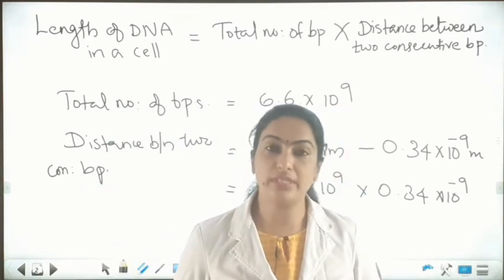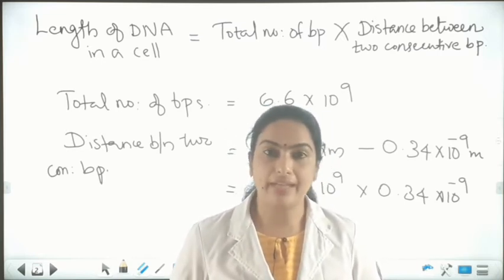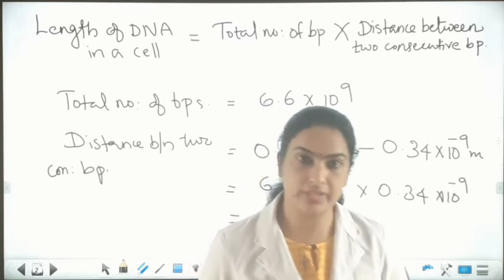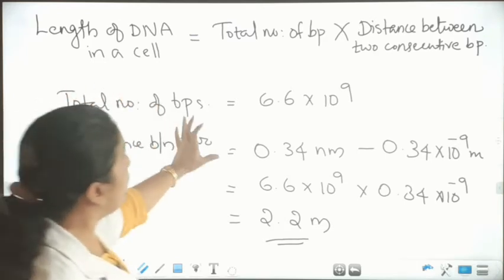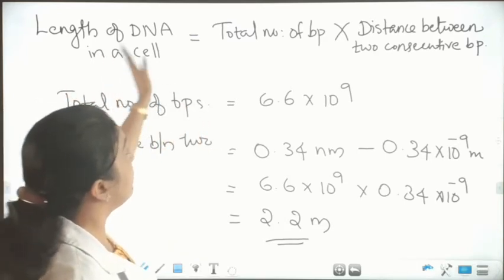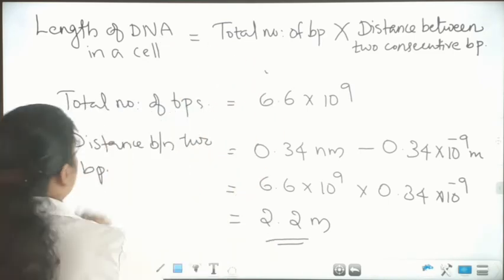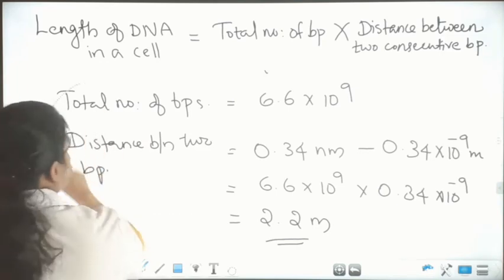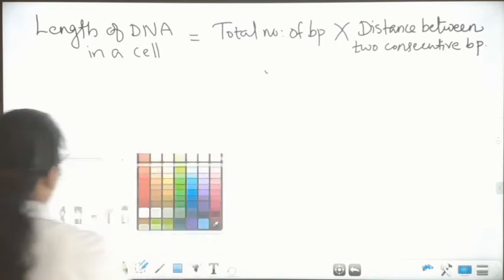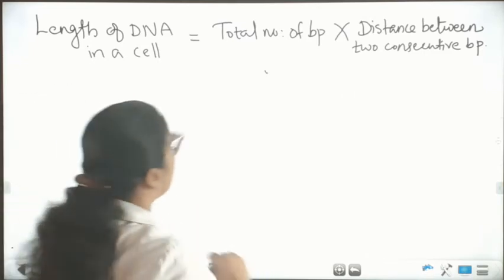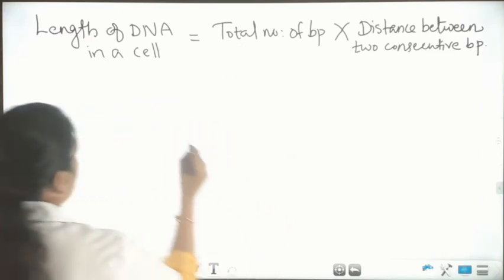So how does this lengthy chain of DNA get packed inside the nucleus? If we know the length of the DNA, we can also calculate the number of base pairs. Which formula can we use? If we know the length of the DNA, we can calculate the total number of base pairs by using a formula.